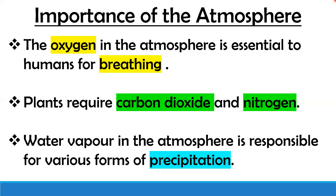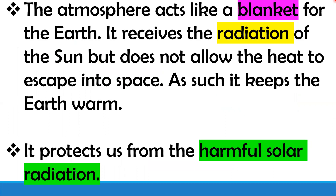Importance of the atmosphere: The oxygen in the atmosphere is essential to humans for breathing. Water vapor in the atmosphere is responsible for various forms of precipitation, controls the temperature of a place, and helps in the formation of rainfall. The atmosphere also acts like a blanket for the earth — it receives the radiation of the sun but does not allow the heat to escape into space, and as such keeps the earth warm.